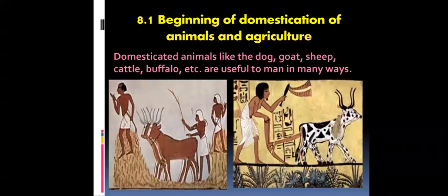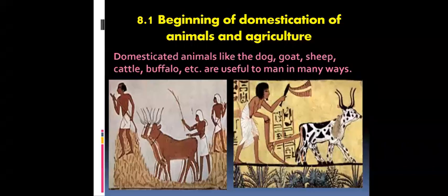Domesticated animals like the dog, goat, sheep, cattle, buffalo, etc. are useful in many ways to human beings. There are three main steps in the domestication of any animal species. This process involves three main steps.